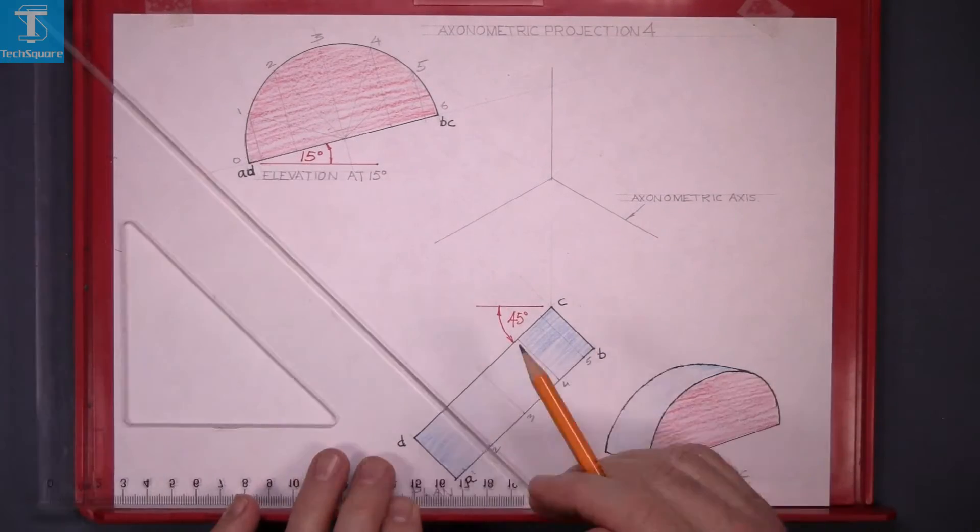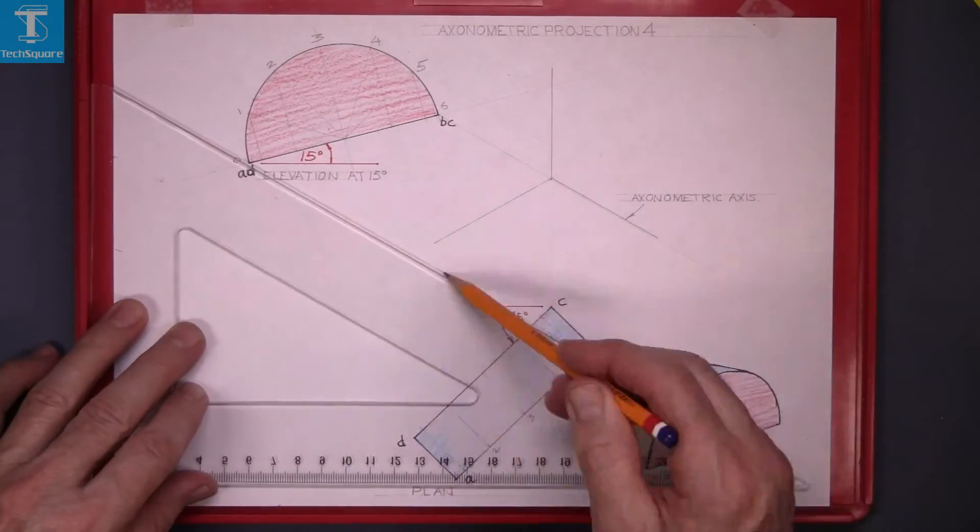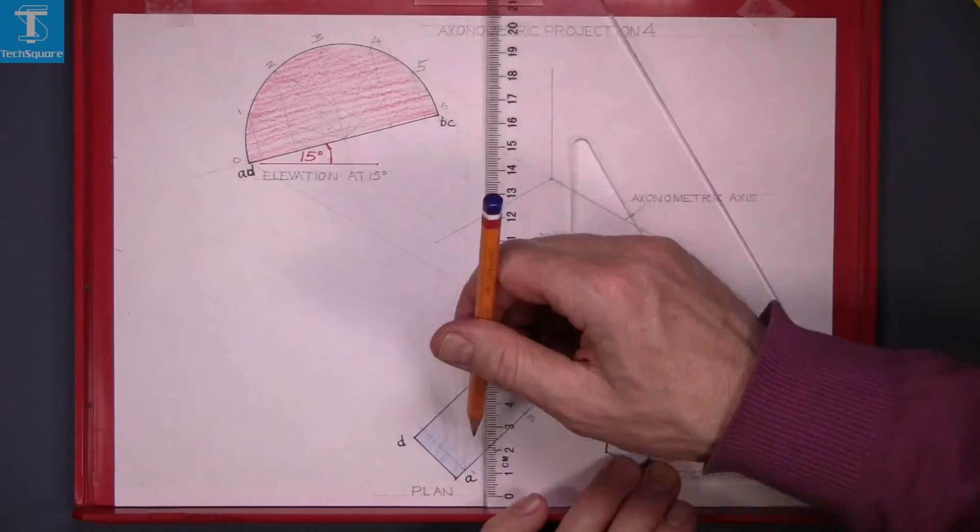Draw them back at 60 degrees. Project in the points from the elevation and project up the points from the plan.